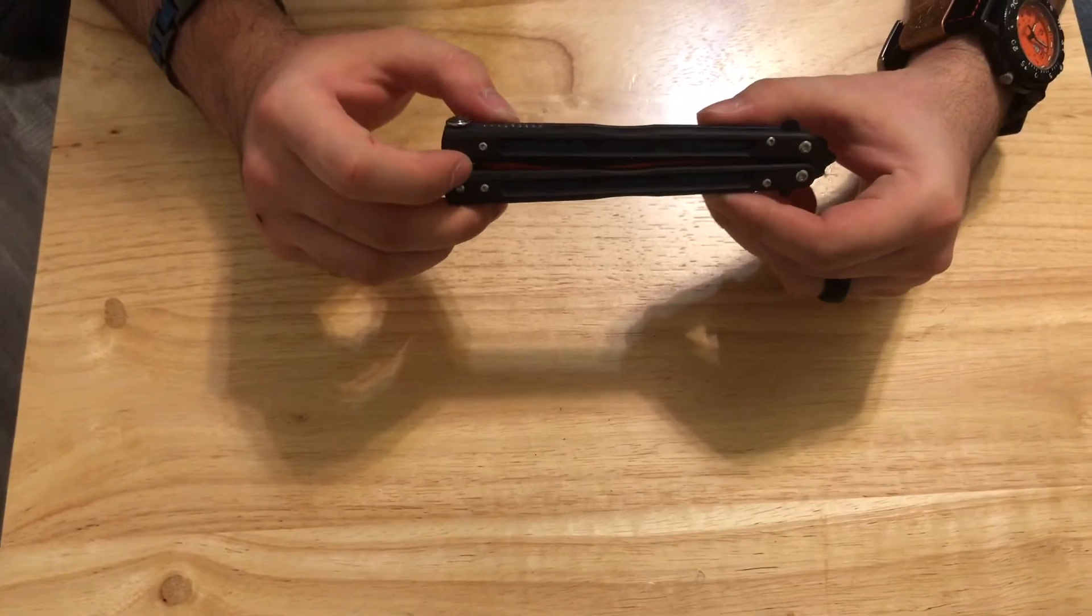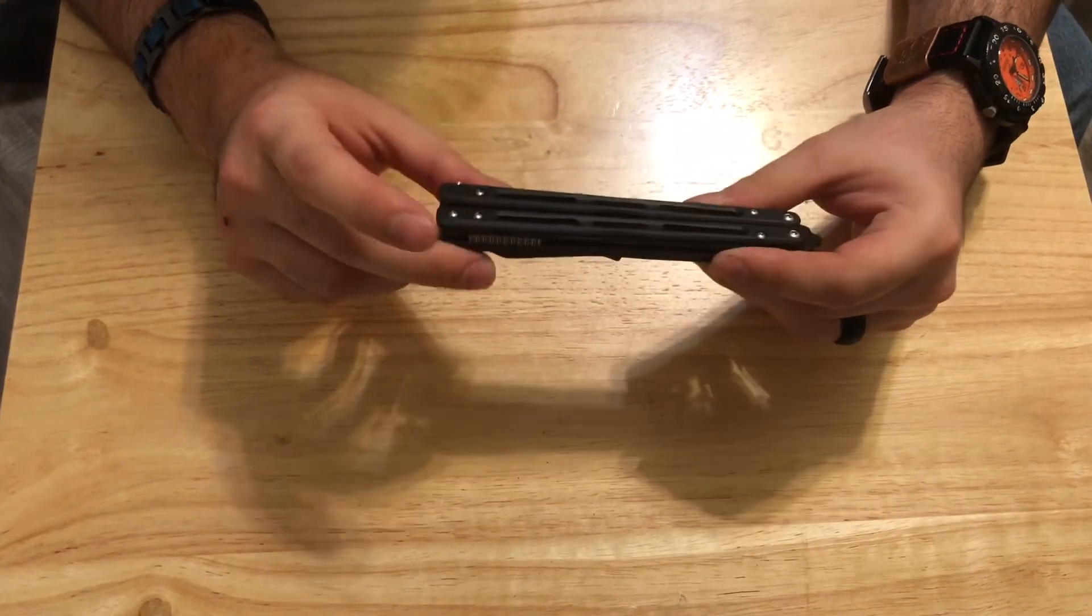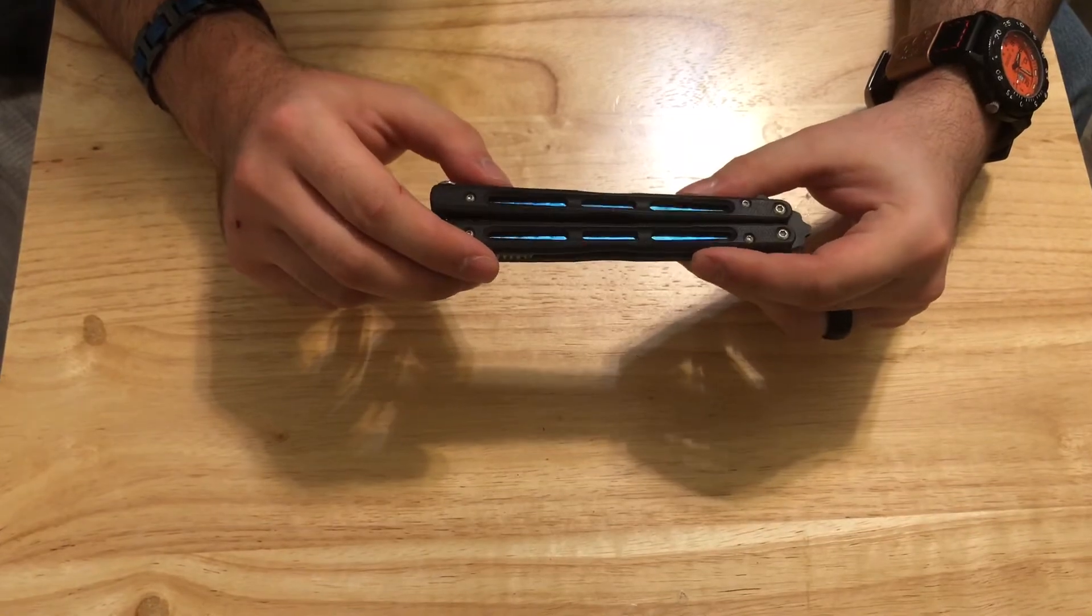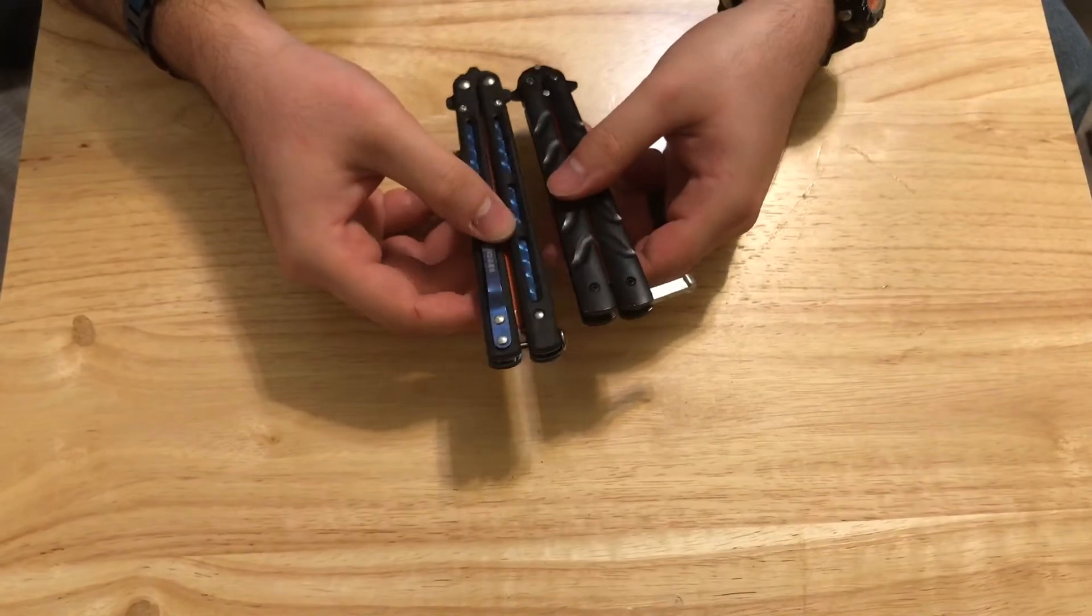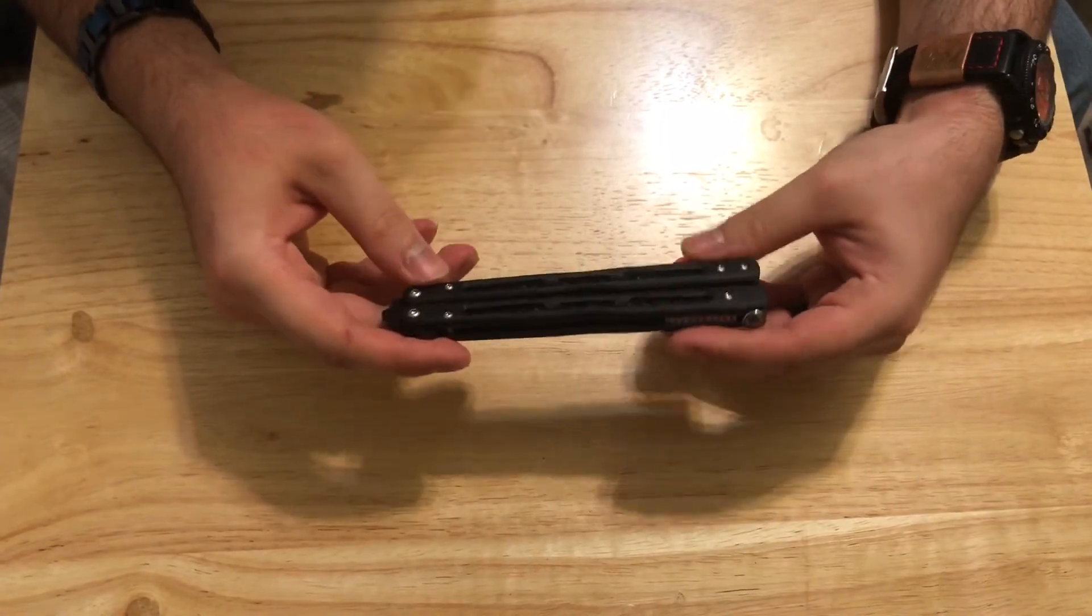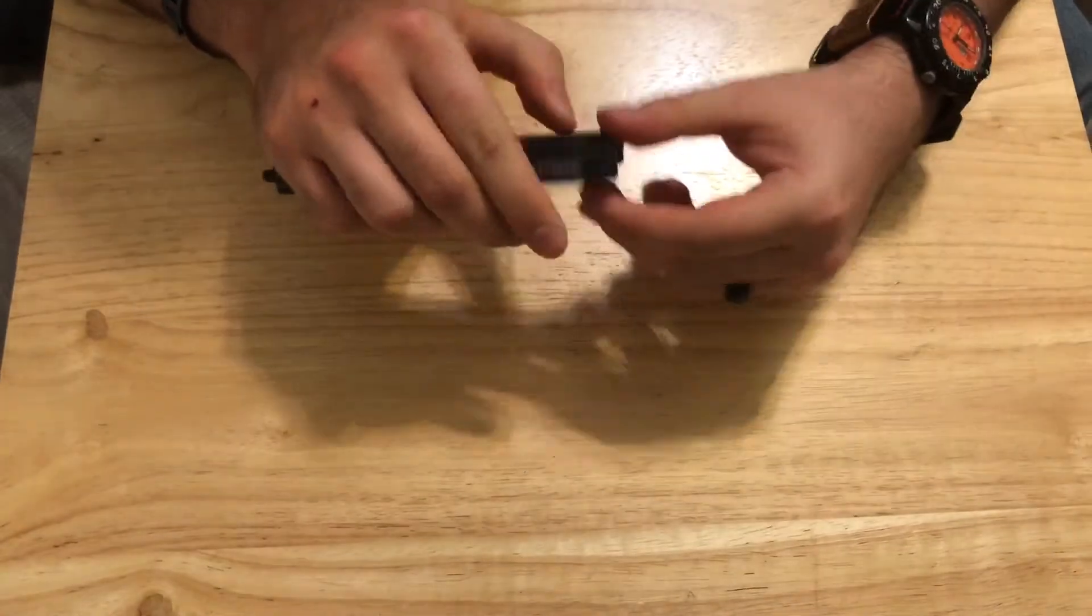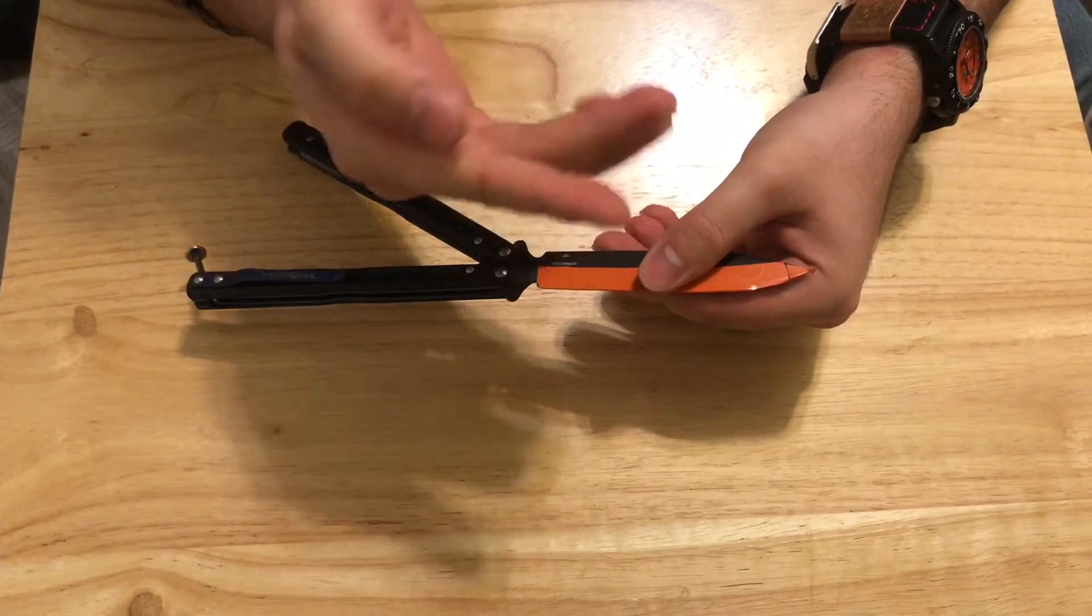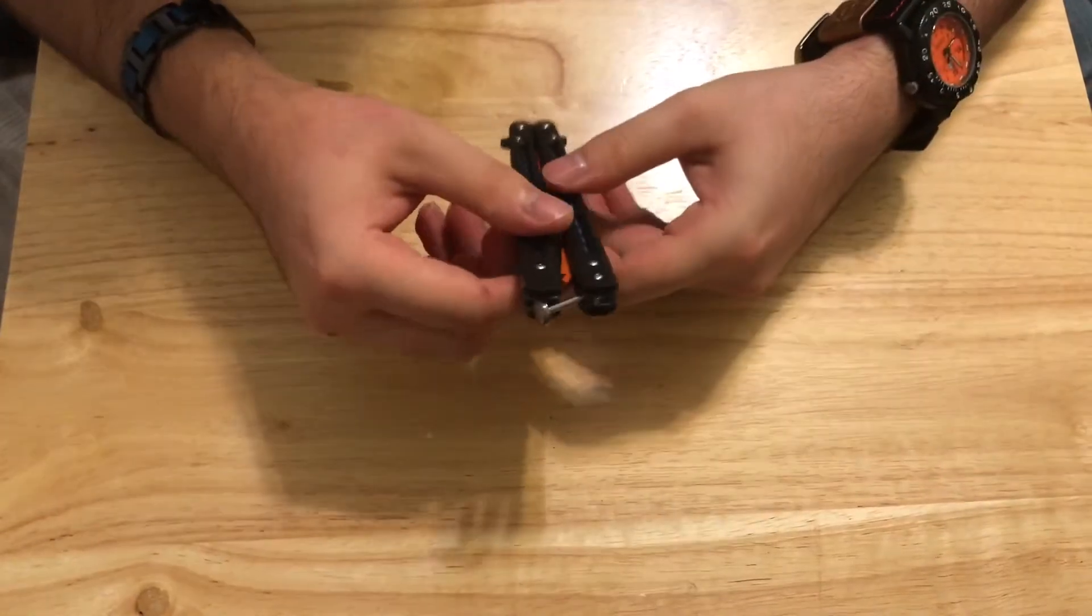I do have tape on this right now because getting used to the weight of this knife is different. The trainer weighs about double the Benchmade and is more dense. The Benchmade is bigger in size but lighter, like a feather in comparison. I put tape there so I don't get cut, as I've already gotten cut a couple times and poked myself on the finger.